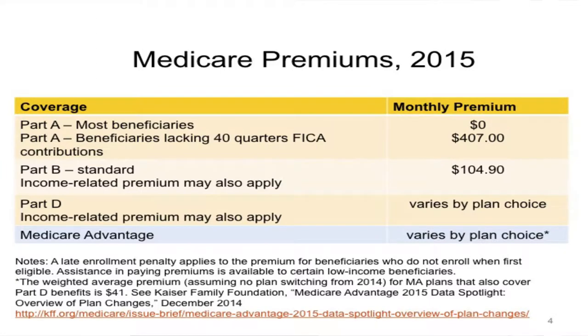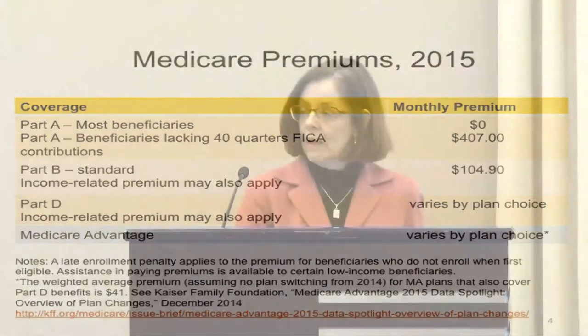To review: for Medicare Part A, this is the part of the benefit people get from having paid in payroll taxes over the years. There is no premium unless people haven't paid in enough quarters, in which case the premium can be as high as $407 a month, but very few people pay any premium for Part A. For Part B, the standard premium is about $105 a month in 2015, and there's an income-related premium that may apply for higher income beneficiaries. When people choose to enroll in Part D for a prescription drug benefit, they will also pay a premium, and again there's an income-related portion that may apply.